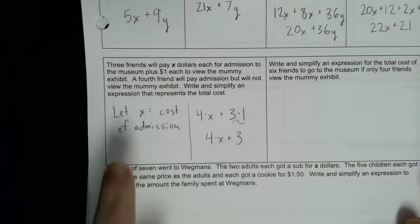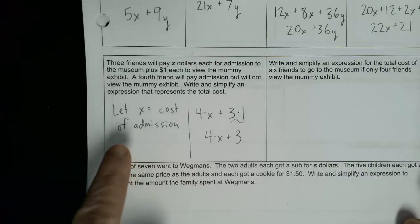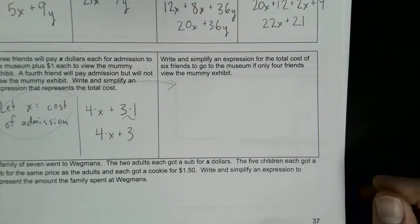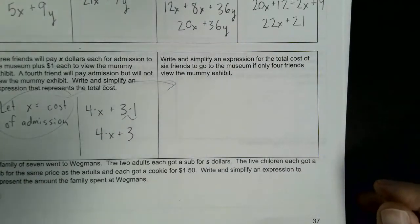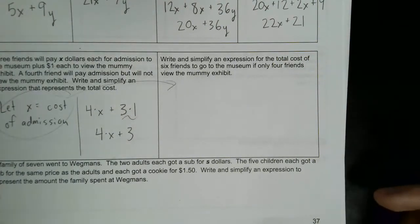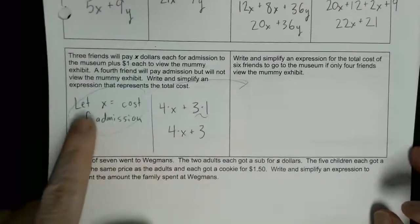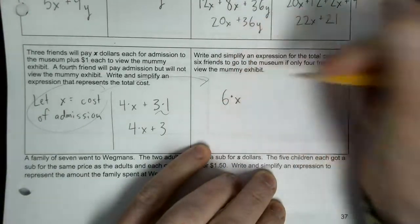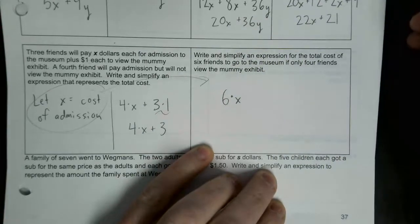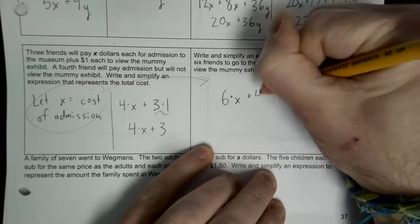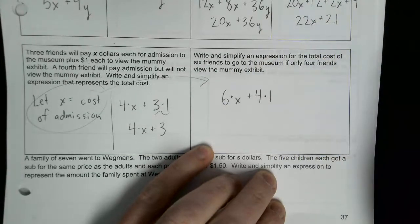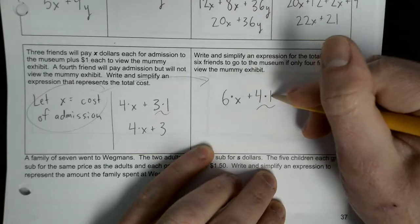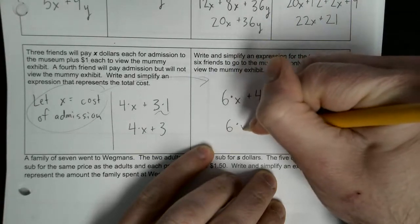This next question is related to this one, so we're going to use the same let statement. It says write a simplified expression for the total cost of six friends going to the museum if only four friends view the mummy. Six friends go to the museum, so that's six tickets — 6x would be the cost of the tickets. Then four people are going to see the mummy, and the mummy is $1, so it would be 4 times 1. Simplifying: 4 times 1 is 4, so the answer is 6x plus 4.